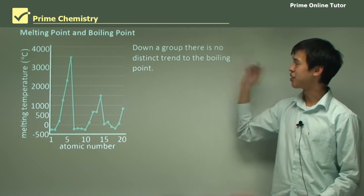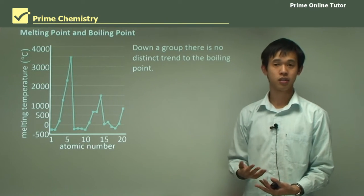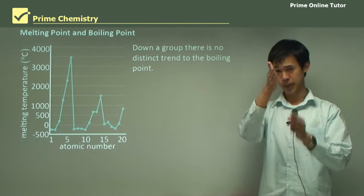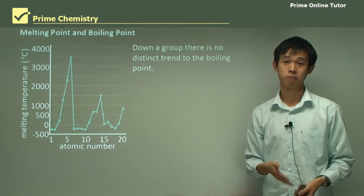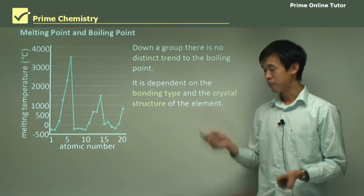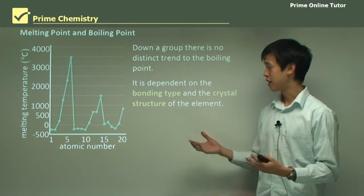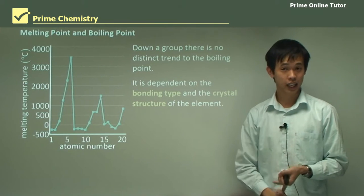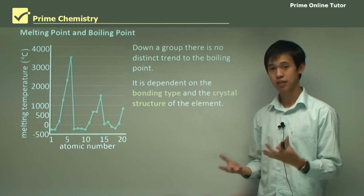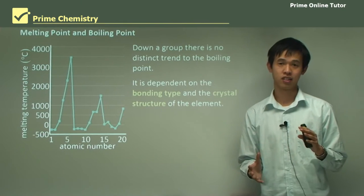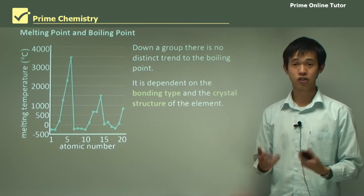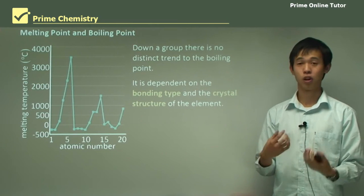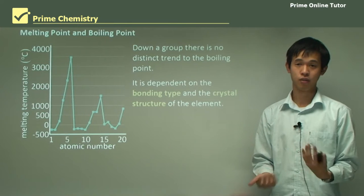When we go down a group, however, there's not really a distinct trend that we see between melting and boiling points. It depends on what group you're talking about and also on some other factors, so we can't really discern a trend going down a group. Melting and boiling points in general are very dependent on the bonding type — covalent network, covalent molecular, metallic, ionic — and how crystalline the structure is. If a bond is very strong but doesn't bond to other elements in a system, we have a very low melting and boiling point because they're not working together.